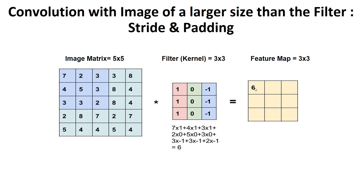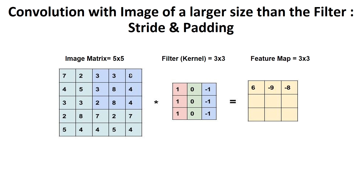We get a new 3 by 3 part from the image matrix and multiply it, placing the resulting summation as the second element of the feature map. The feature map is the resulting matrix after applying the filter onto the image matrix as element-wise multiplication. If the image matrix is larger than the filter, we get the sub-part of the image matrix, multiply by the filter, find the resulting value, and put it into the corresponding location in the feature map. After that multiplication, we move one column to the right.